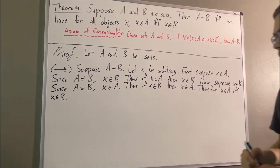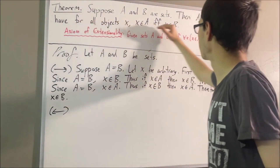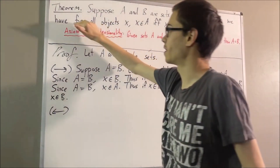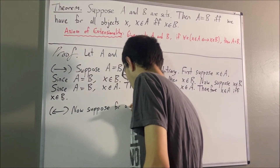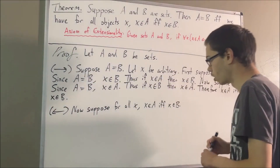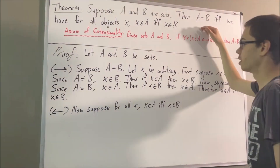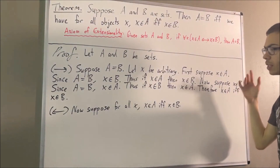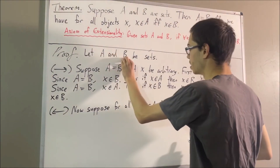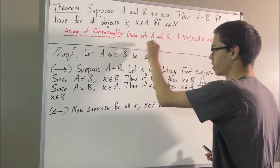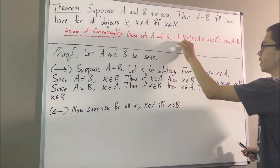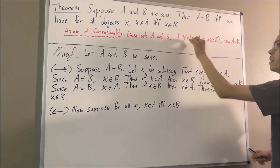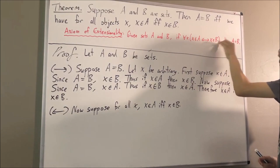Now we're going to prove the converse — meaning we're trying to prove that if for all X, X is an element of A if and only if X is an element of B, then A is equal to B. So, let's suppose that statement is true. Our goal is to prove that A is equal to B. But the axiom of extensionality tells us that A is equal to B, because we have sets A and B, and the hypothesis gives us exactly the condition required. Therefore, A is equal to B.